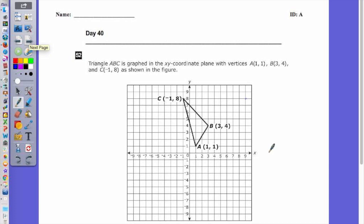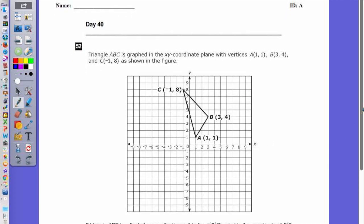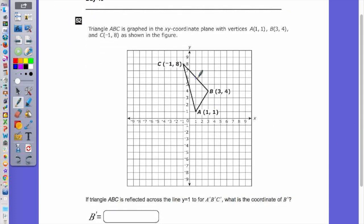52. All we're basically doing is reflecting coordinate B across this line. So instead of being 3 units up, it's 3 units below the line, which is at 3, negative 2.